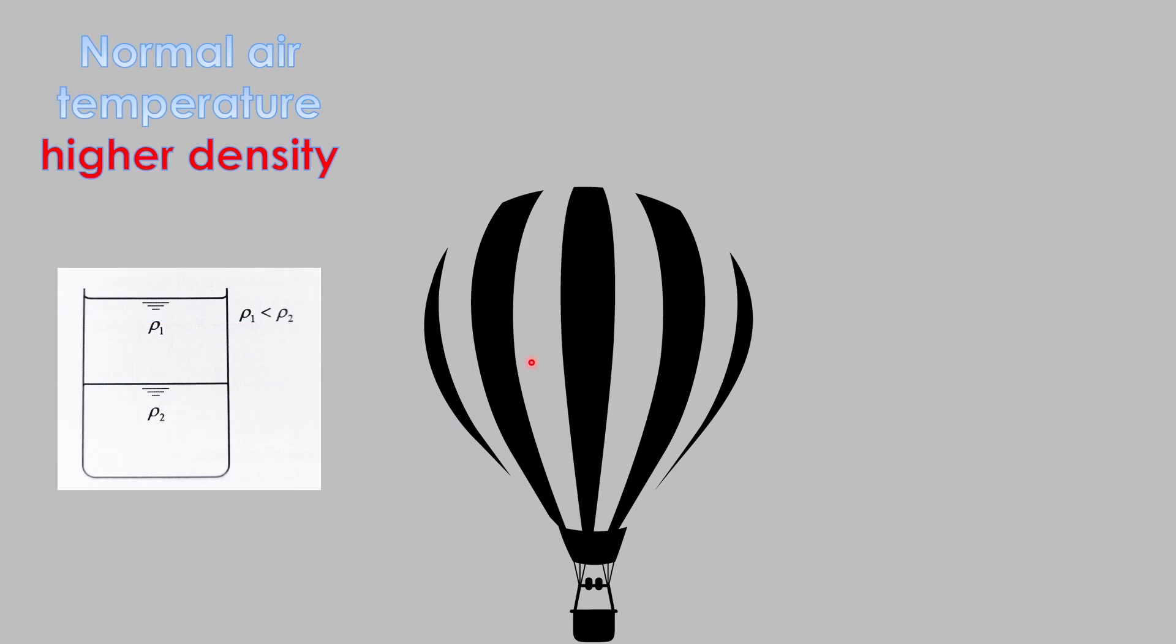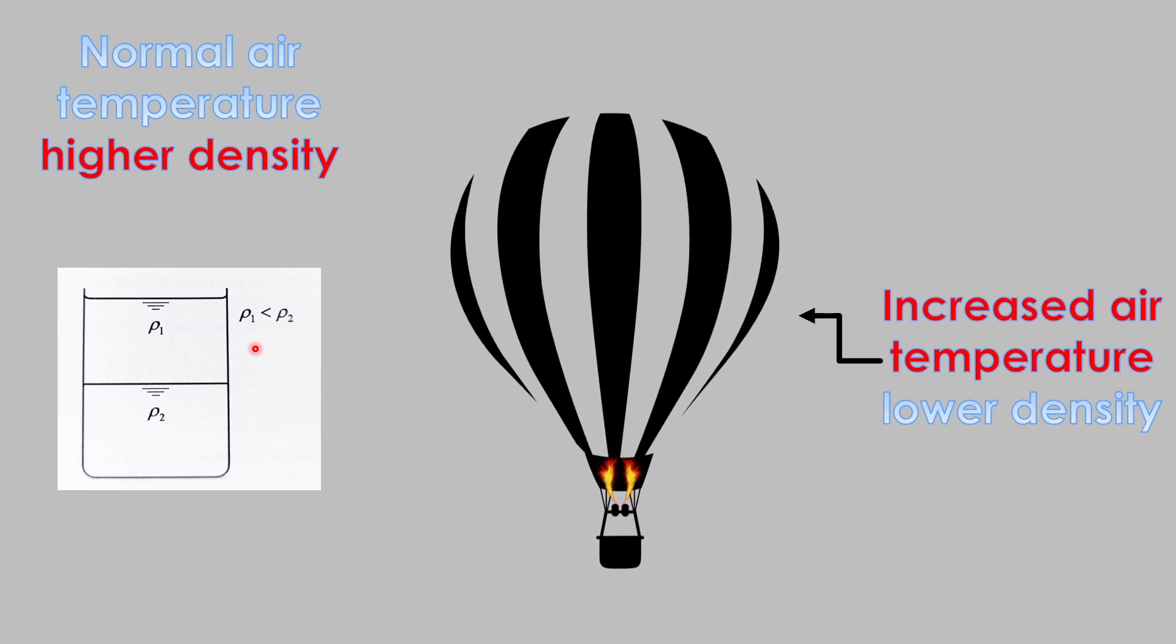That this principle is most evident in hot air balloons. How do they fly? How do they lift up? Now outside we have normal air temperature which is of a higher density, and these hot air balloons are called hot air balloons for a reason. They have burners here that burn and heat up air inside of the balloon. Now heated air—increased air temperature means lower density. Lower density means rising to the top, and this is how hot air balloons work.